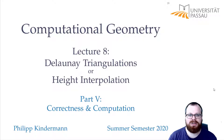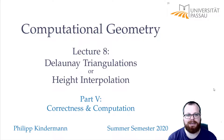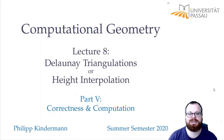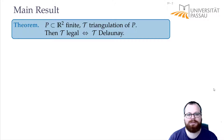Let's recall what we wanted to show. We want to find an angle-optimal triangulation, and we showed that every angle-optimal triangulation is legal. But we wanted to show that every legal triangulation is also angle-optimal. To do that, we want to use the Delaunay triangulation. First, we want to prove that a triangulation is legal if and only if it is Delaunay, and then from there we can show angle-optimality.